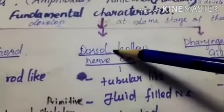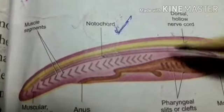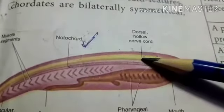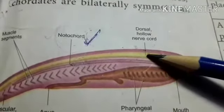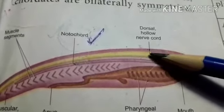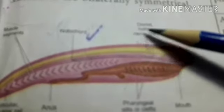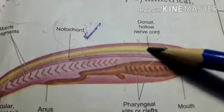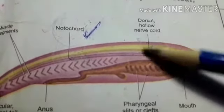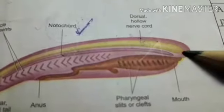Next, the dorsal hollow nerve cord. The dorsal hollow nerve cord is a tubular elongated structure extending from the anterior to the posterior region. Its location is below the dorsal wall and above the notochord. This nerve cord conducts and coordinates body functions. Dorsal means the back side; ventral means the belly side.